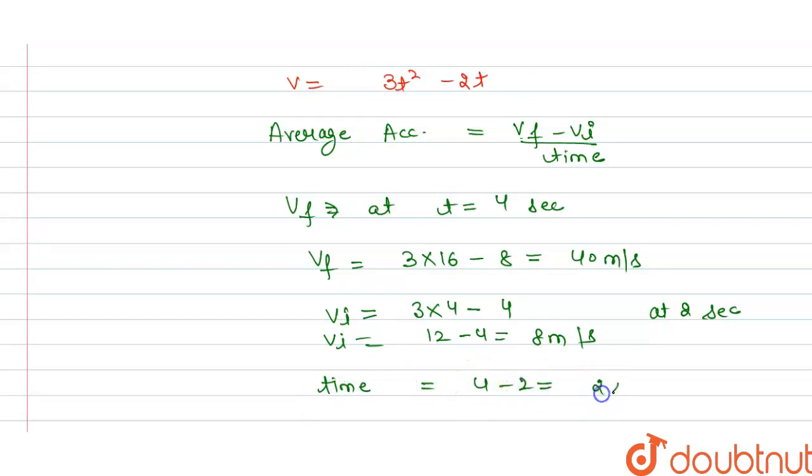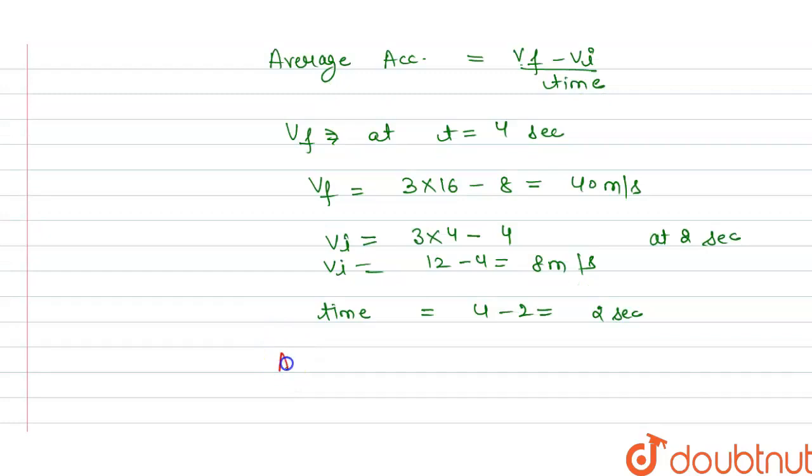So from this we get average acceleration is final velocity that is 40, initial is 8, and divided by 2, that is time. So this is equals to...